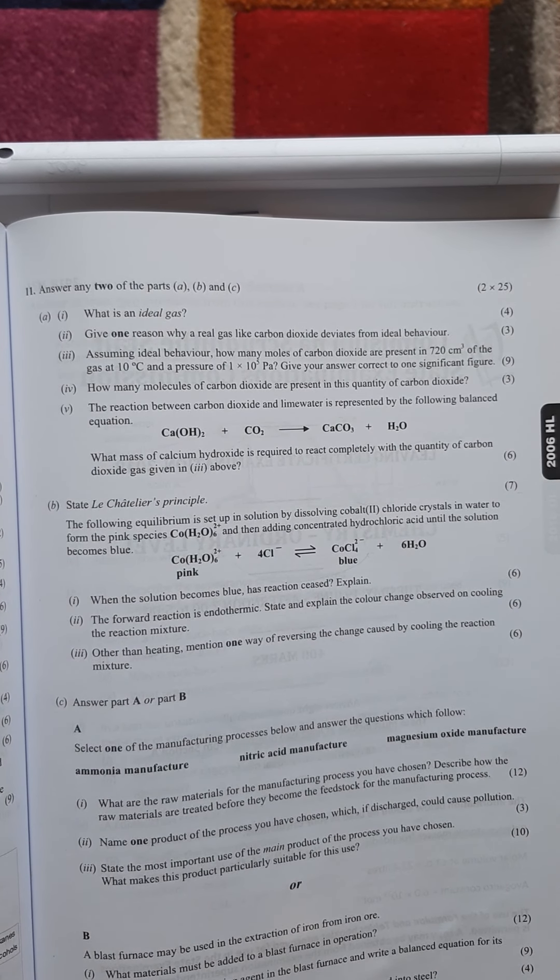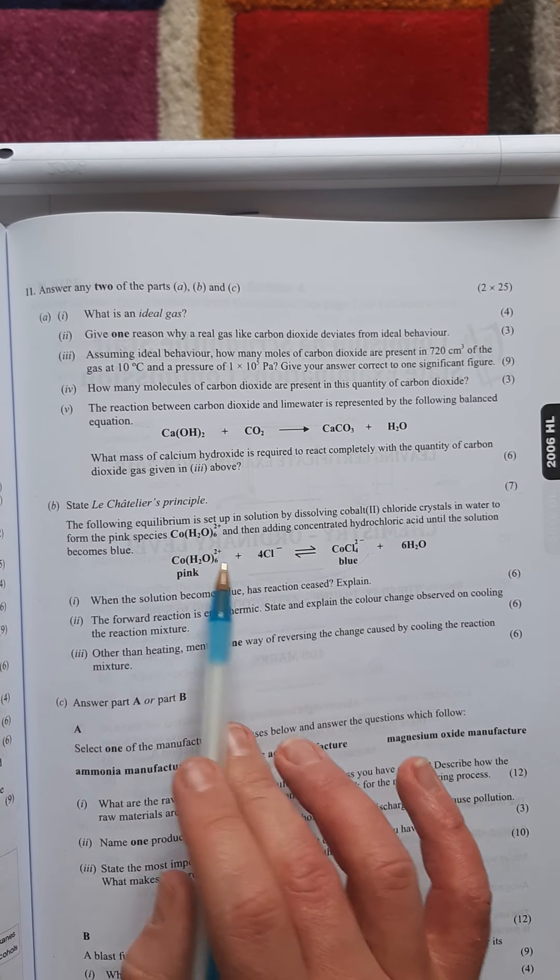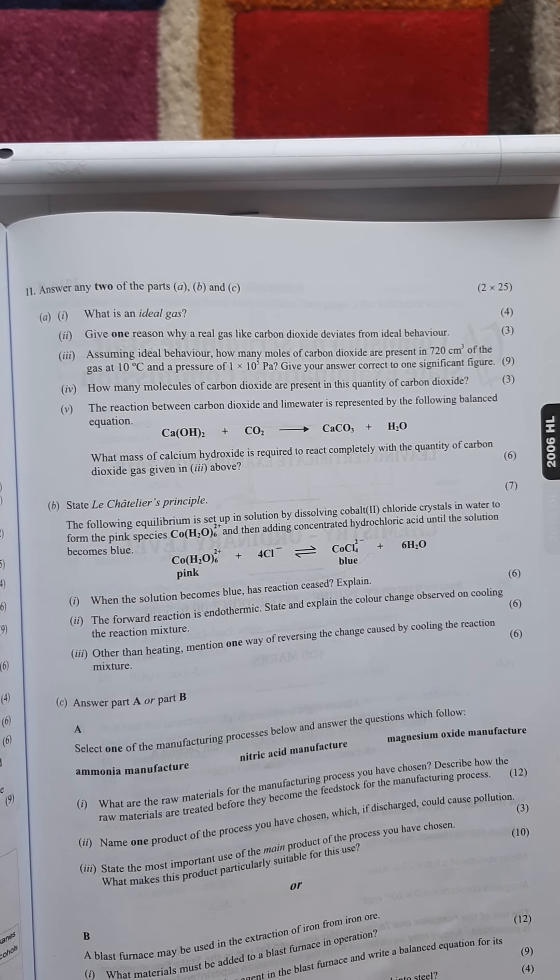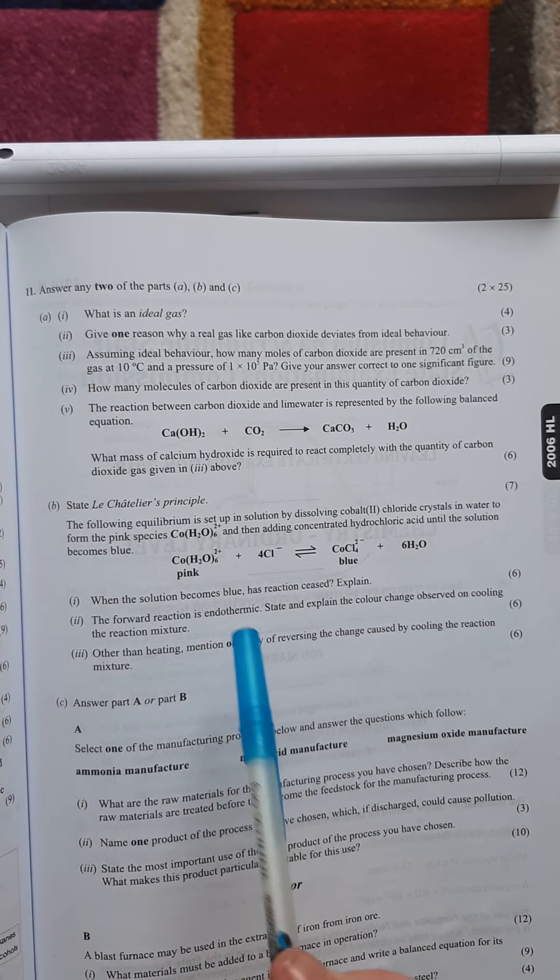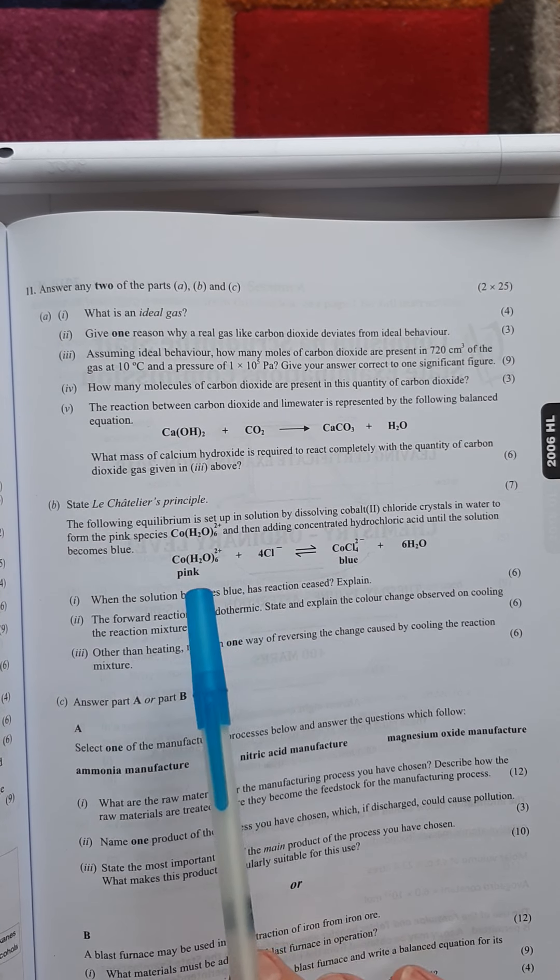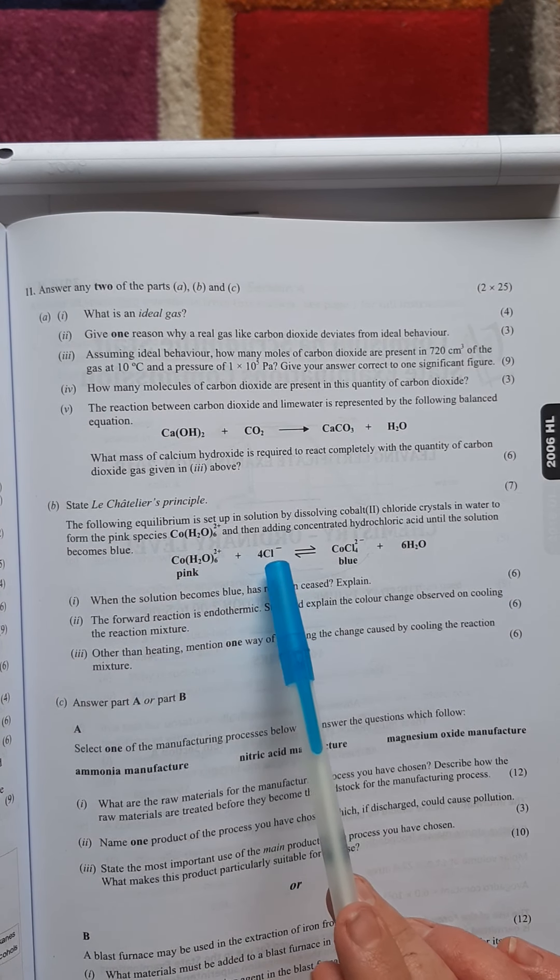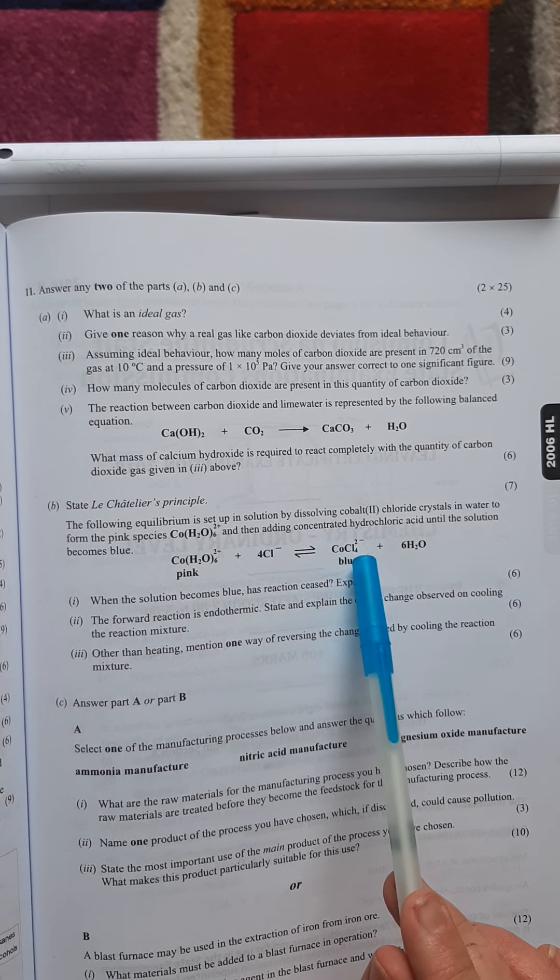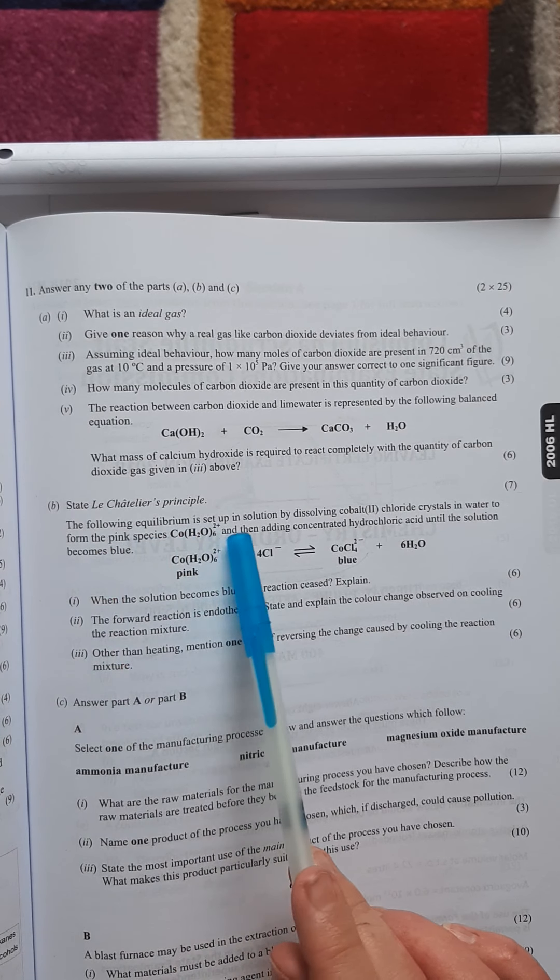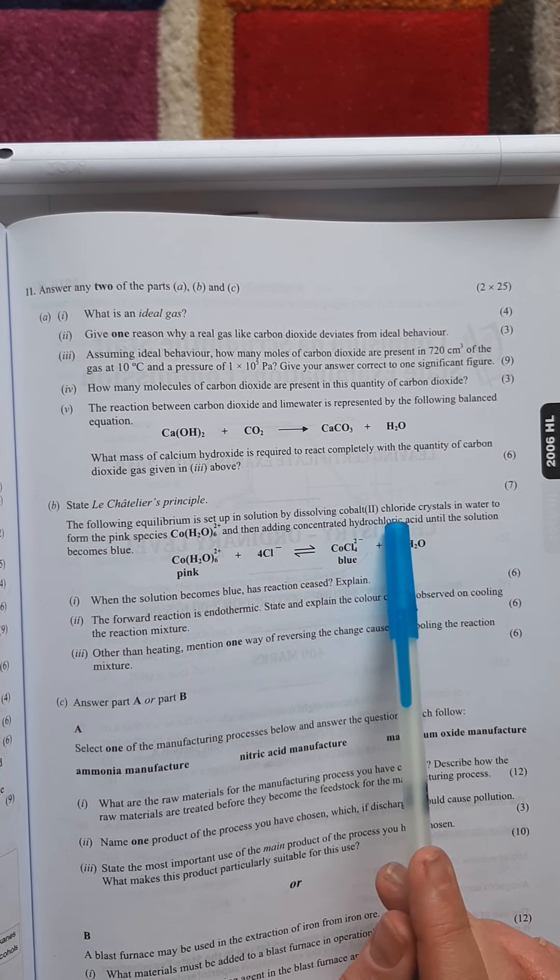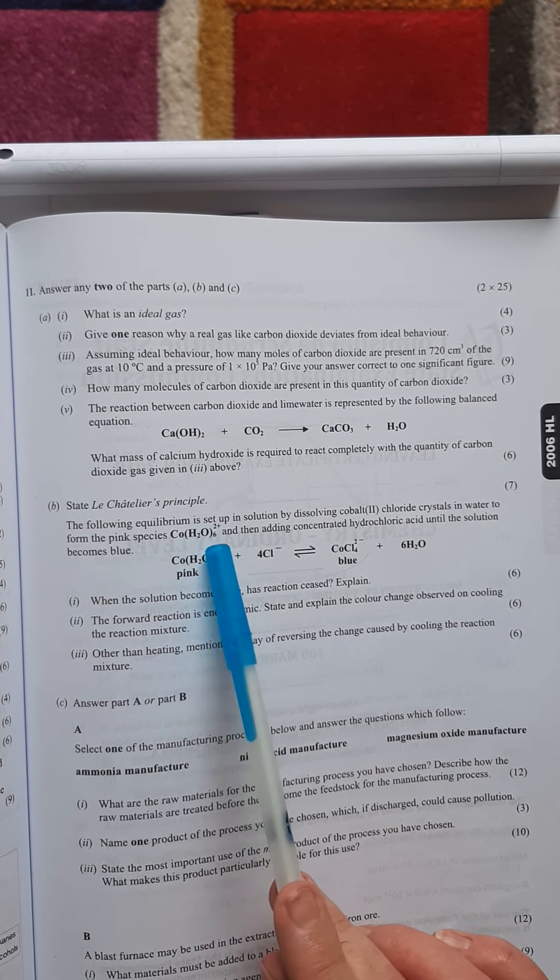Then the next part of the question looks at this equilibrium from the PowerPoint we were looking at earlier. We've got this cobalt complex, cobalt with six waters added which is pink, and chloride ions. Then you're getting this cobalt chloride which is blue and then you get water.